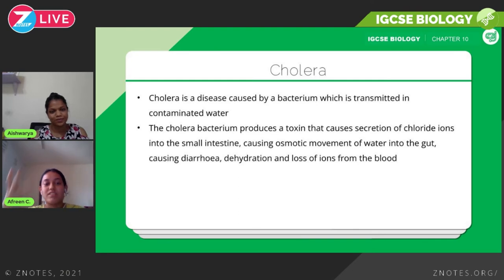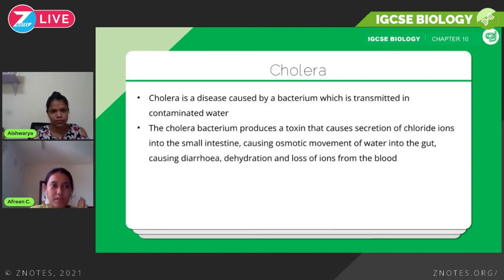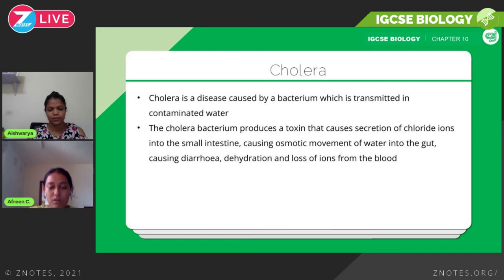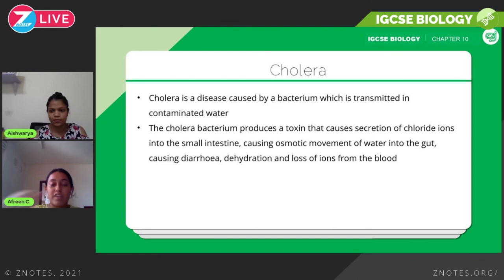Cholera is a disease caused by a bacterium transmitted in contaminated water. It's common in countries with limited access to safe, clean drinking water. The bacteria produces a toxin that causes secretion of chloride ions into the small intestine, which changes the water equilibrium — causing an osmotic movement of water into the gut, resulting in diarrhea.